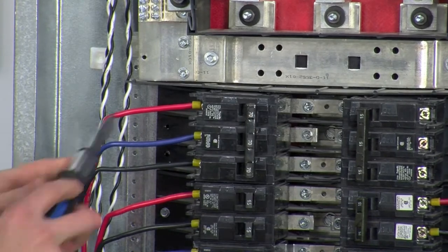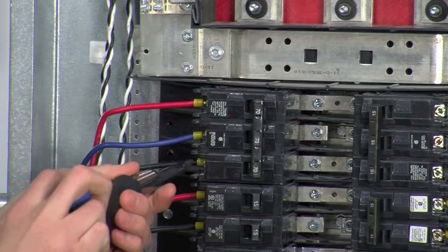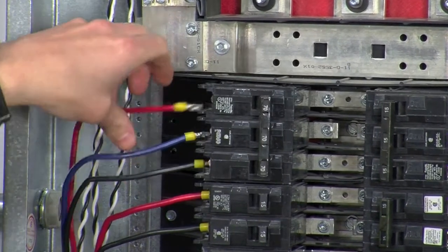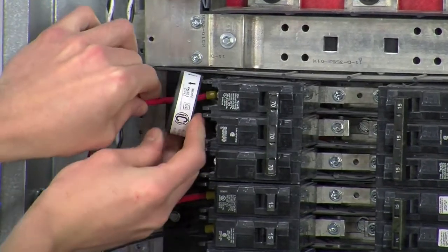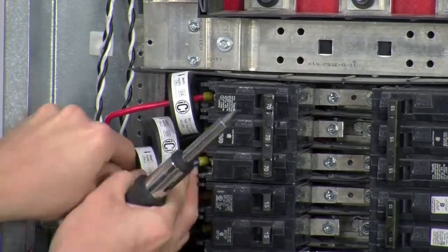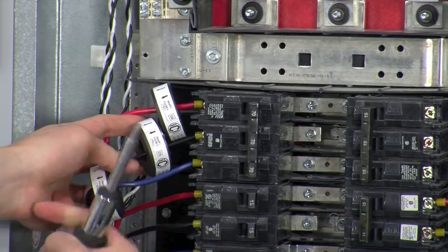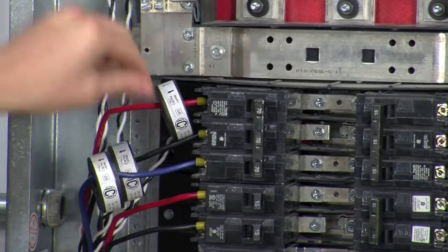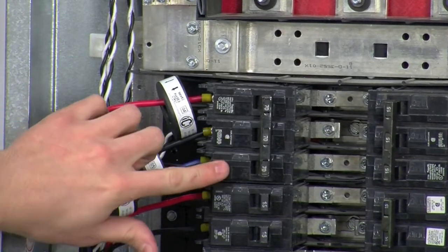So, using a screwdriver, loosen off the feeds one at a time. As you can see, I already have my CT somewhat in place here. So, we're going to pull those out of the way for now. We're going to take CT4, and install it onto phase A. And, as you can see, our load direction arrows are facing out, away from the breaker, because current flows out from the breaker towards the load. So, pull on the lines, make sure they're nicely seated, and just double check that we have CT4 on phase A, CT5 on phase B, and CT6 on phase C.